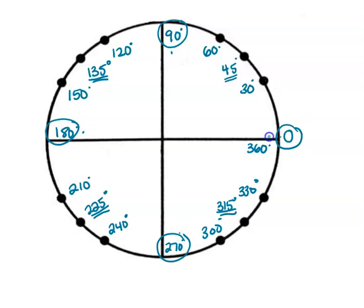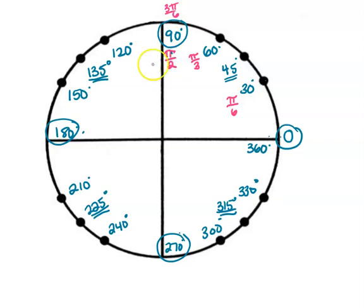Now with radians: instead of adding by 30s, you're going to add by one-sixth. So one-sixth plus one-sixth is two over six, but two over six reduces down to one-third. Remember, radians are about pi, so one plus one gives us two over six; plus one-sixth is three over six, and three pi over six is one-half pi. This is one-sixth, two-sixths, three-sixths; four-sixths is two-thirds pi; five pi over six; and six over six is just one pi.